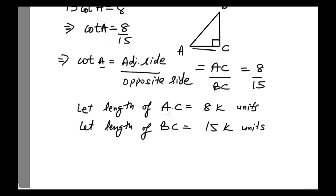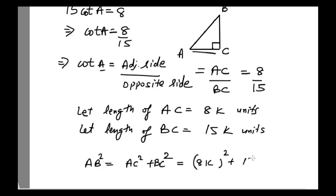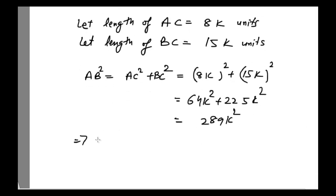From the lengths of AC and BC, we can find the length of AB, which is the hypotenuse of this right-angle triangle. Using the Pythagorean theorem: AB² = AC² + BC² = (8K)² + (15K)² = 64K² + 225K² = 289K². Square rooting both sides, we get the length of AB equal to 17K.